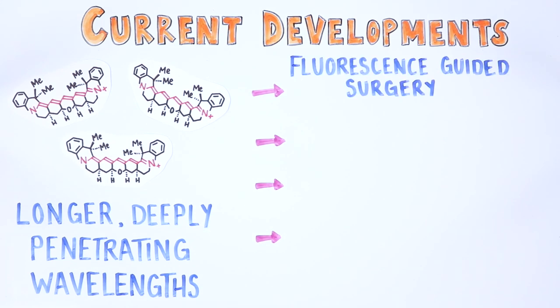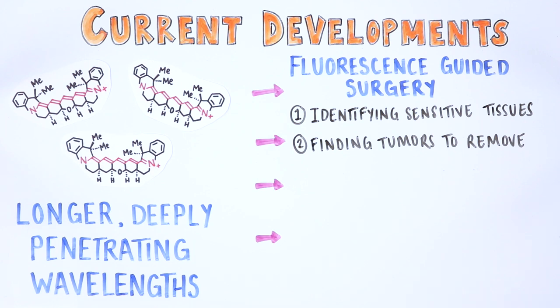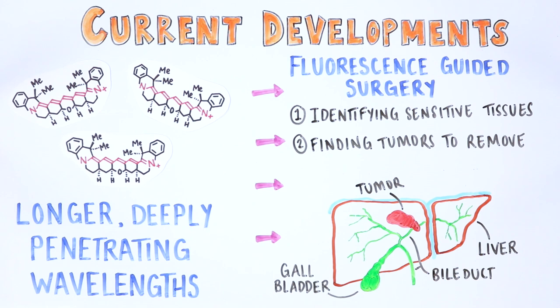In fluorescence-guided surgery, these dyes can be used to help surgeons identify sensitive tissues to avoid, like nerves or the biliary tree, and to help them identify tumors so they can successfully remove all of the cancerous cells. Ongoing studies in our lab are working to synthesize molecules specifically designed for these applications.